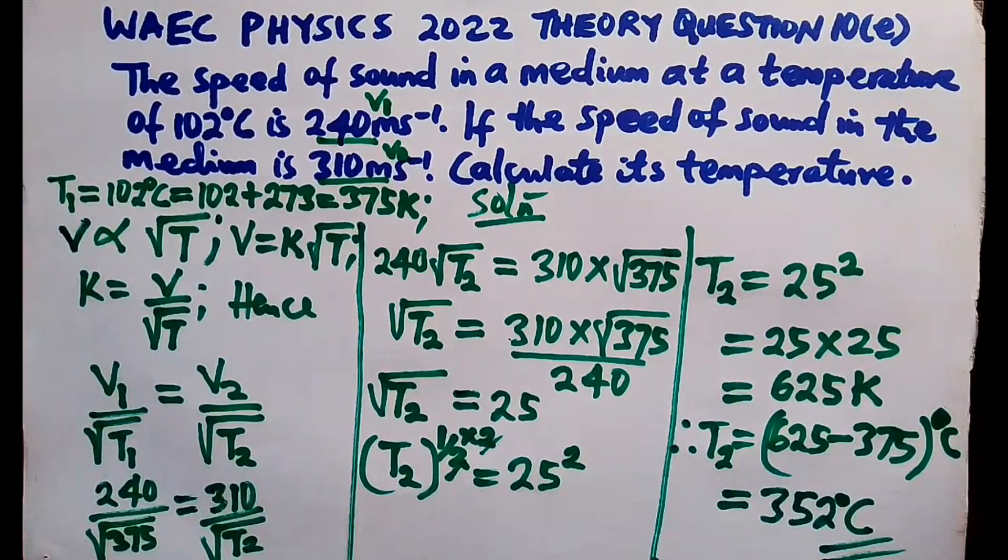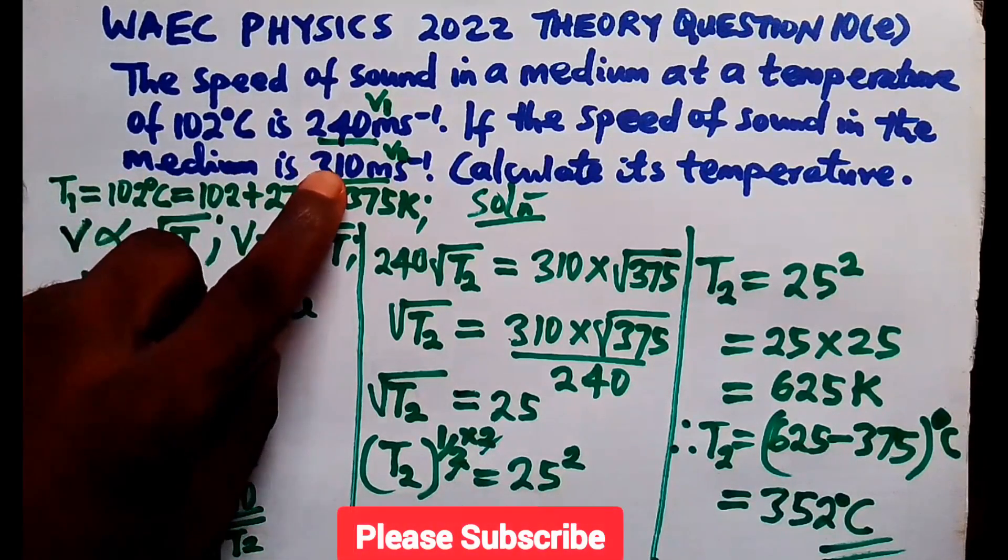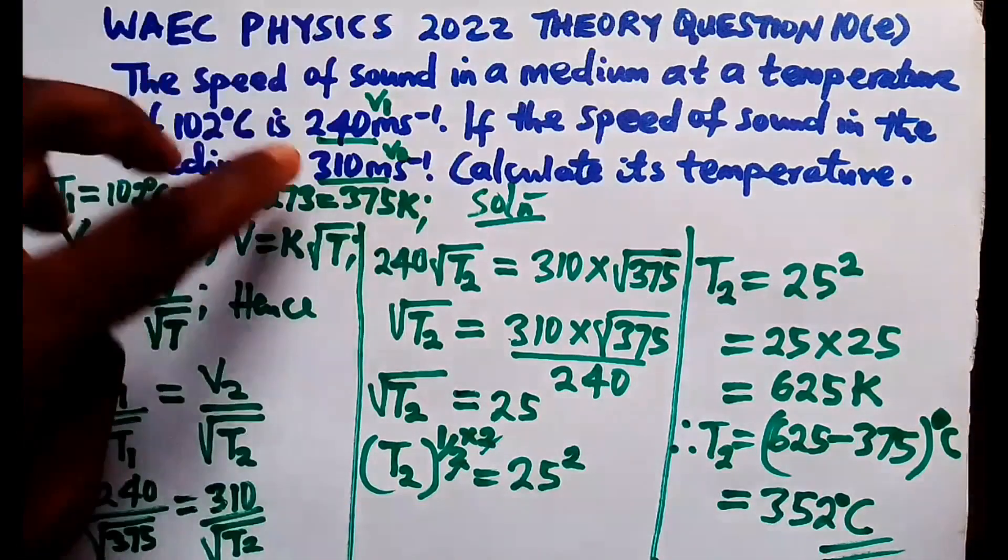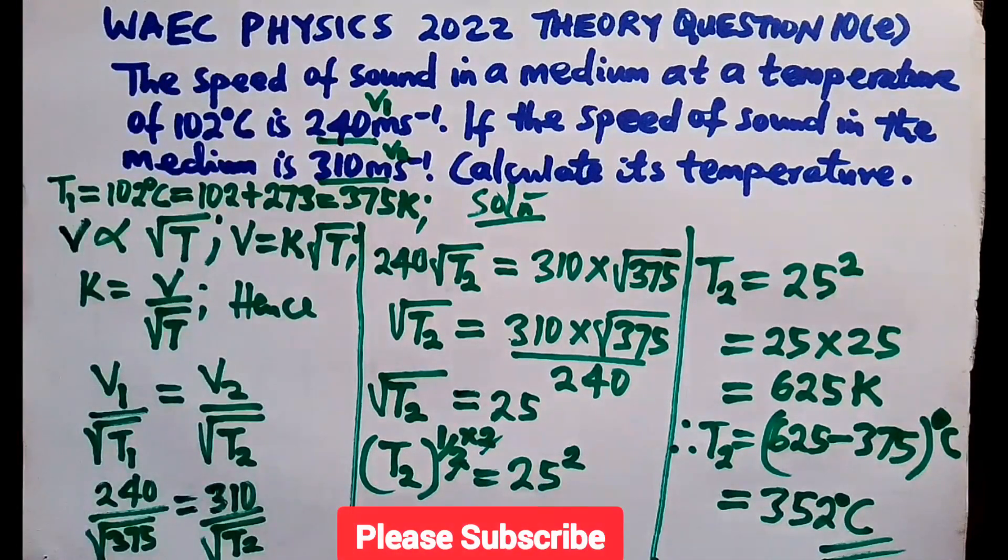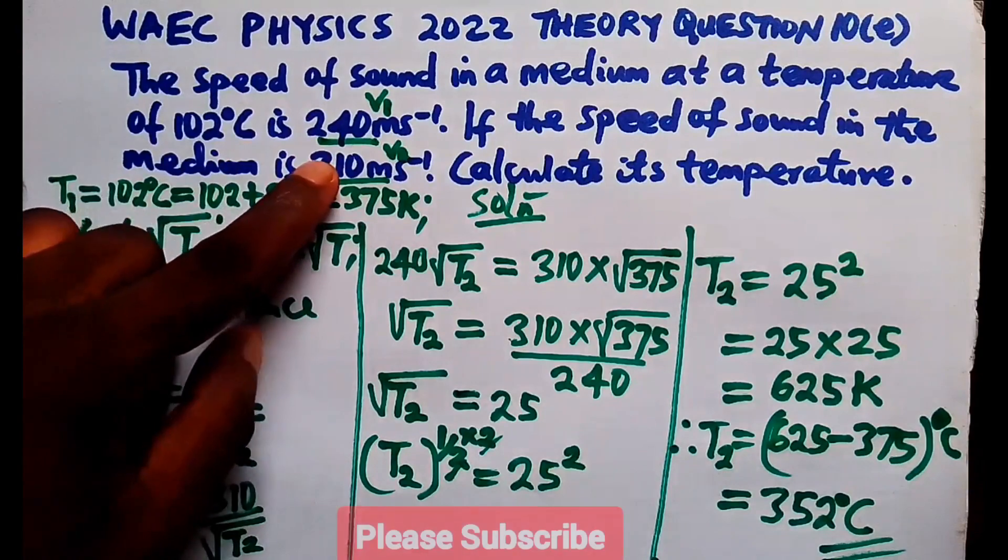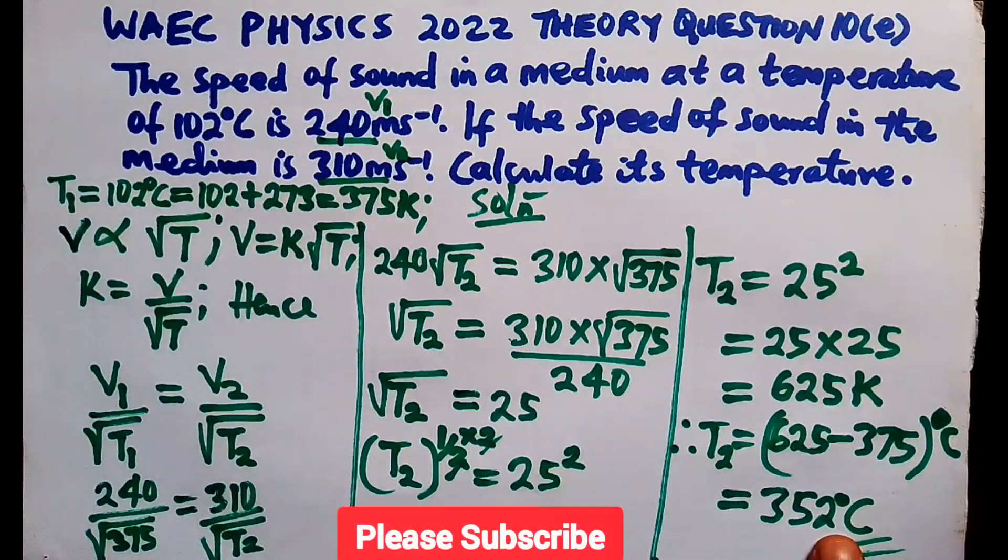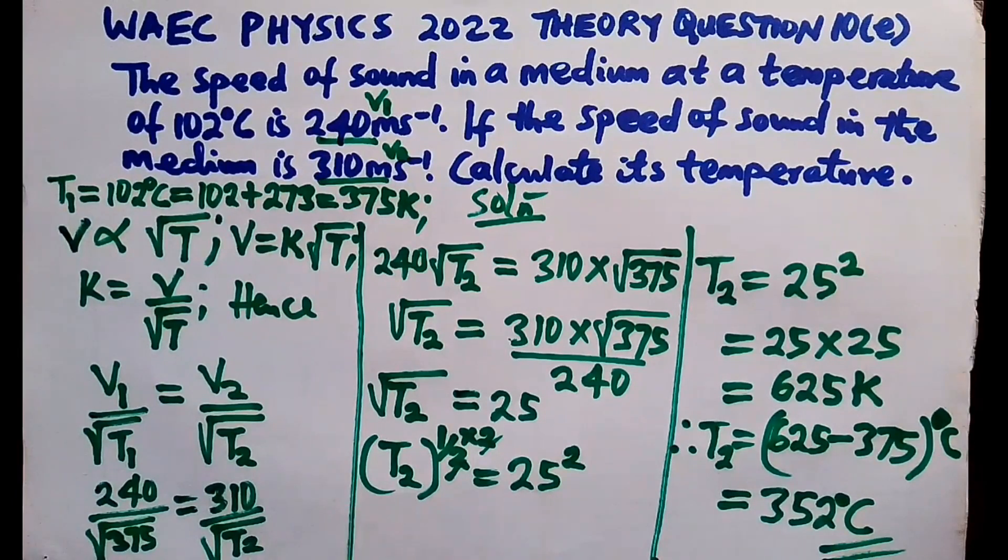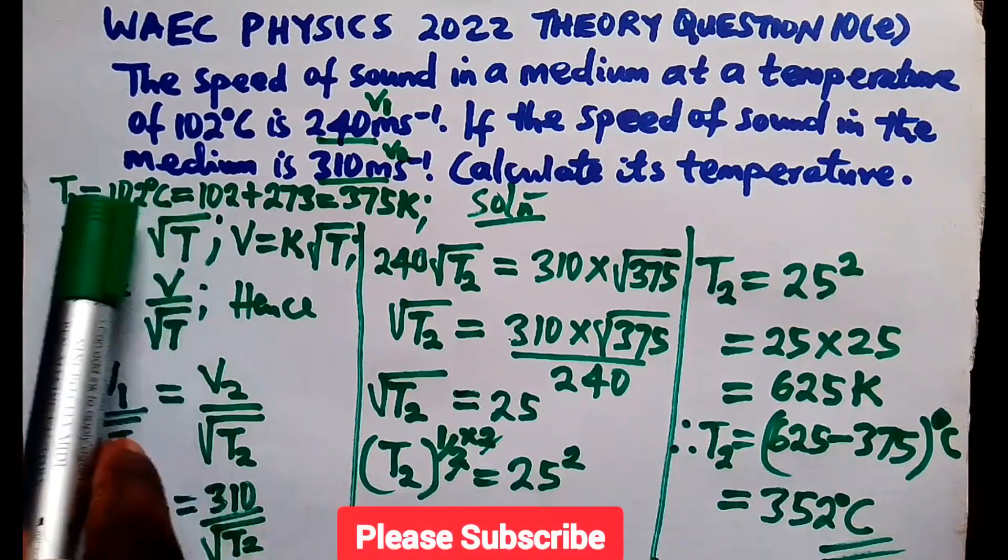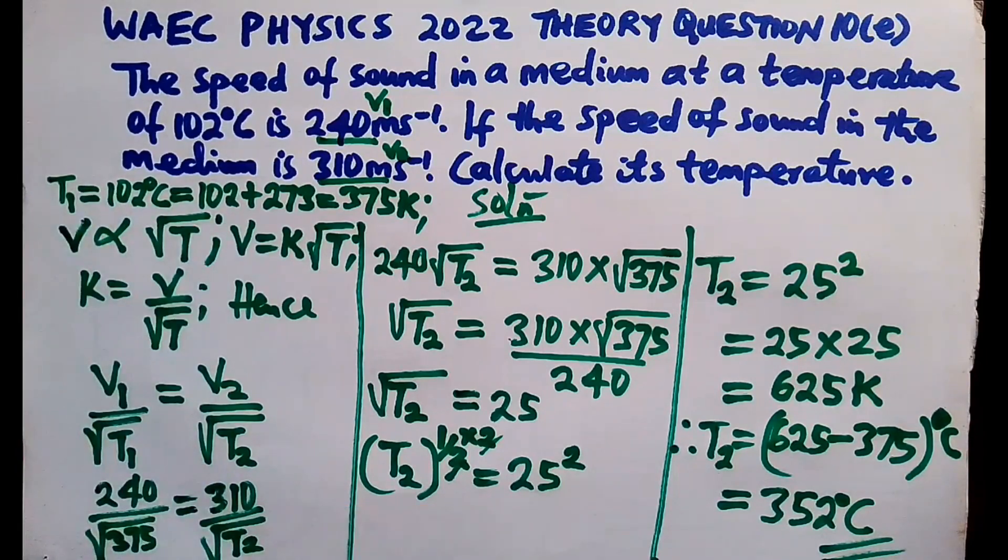Now, you notice that when the velocity is being increased, when the speed of sound is being increased, which is the same as the velocity, when the speed of sound is being increased, then you see that the temperature is equally going to increase. So, that is the relation that we have. So, as this one increases, this other one increases. So, this relation is valid. It's a direct proportionality relation.